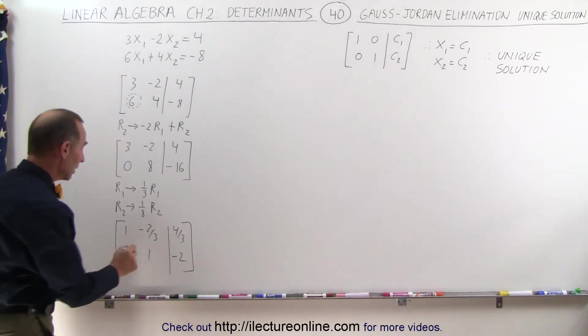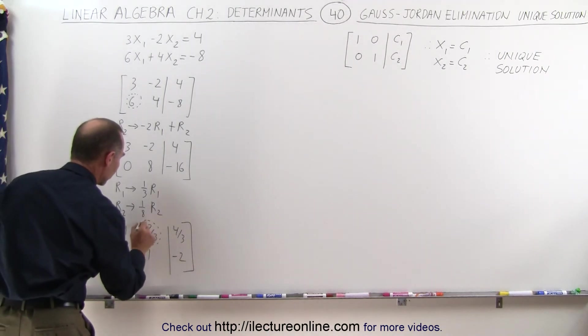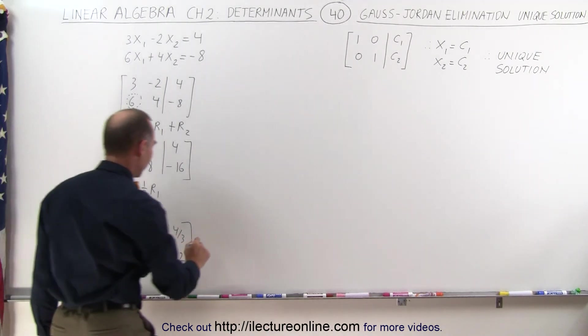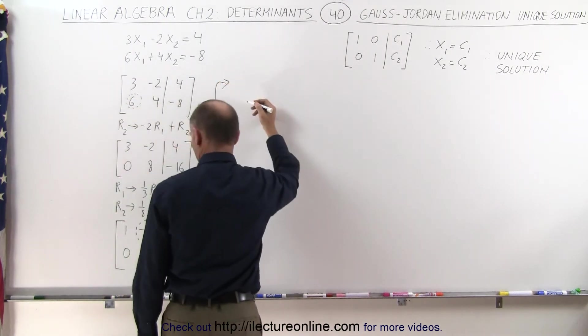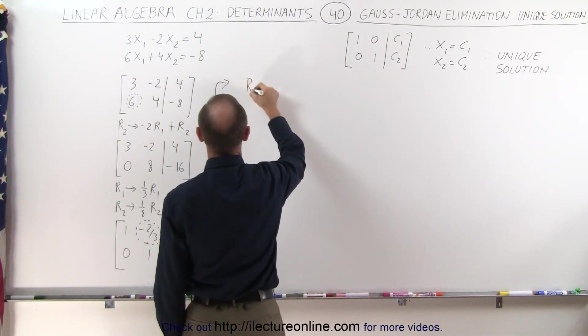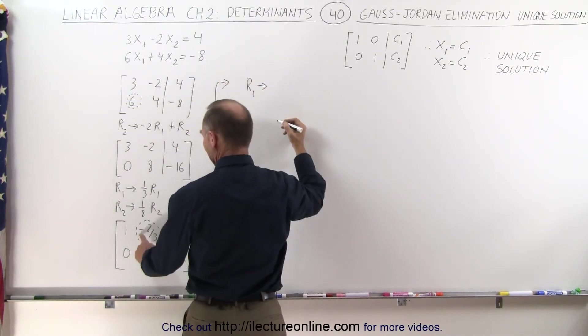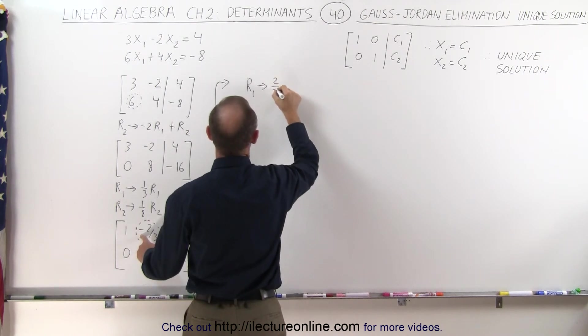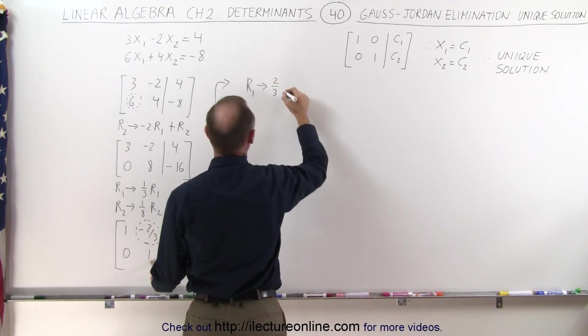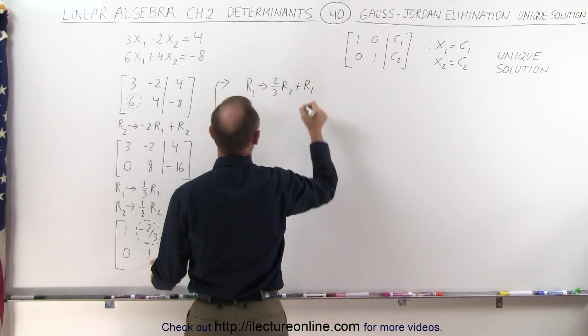Now the only thing left to do is to get rid of this minus 2/3 here. We can do that by taking the first row and replacing it by the negative of that number, which is a positive 2/3, multiply times the row with the 1 in it, R2, and adding it to the first row.